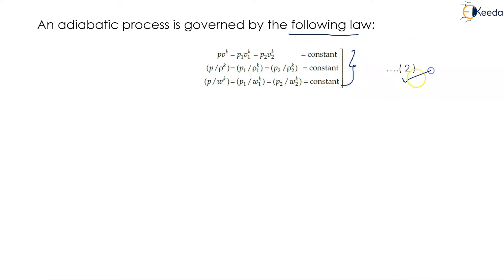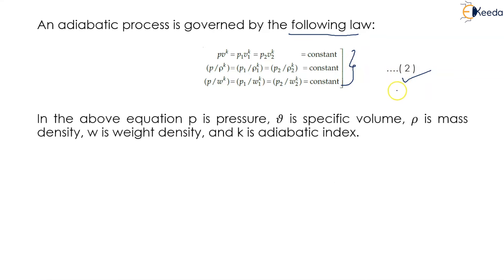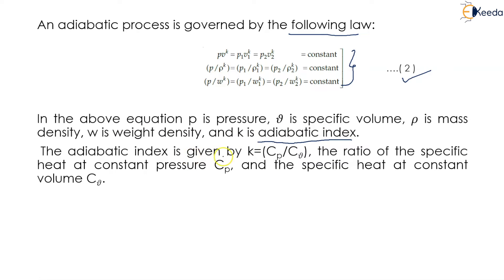These relations form Equation 2. In these equations, P is the pressure, V is the specific volume, ρ is the mass density, ω (omega) is the weight density, and k is the adiabatic index. The adiabatic index is given by k = Cp/Cv, that is, the ratio of specific heat at constant pressure Cp to specific heat at constant volume Cv.